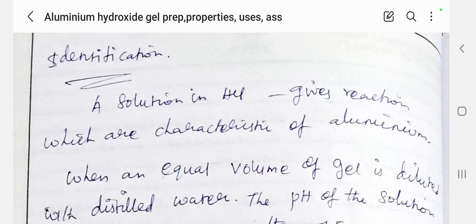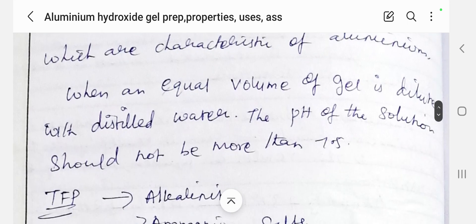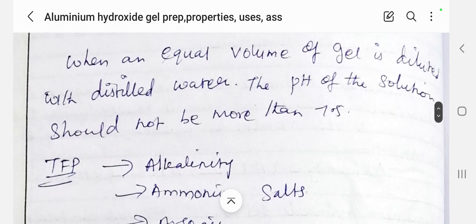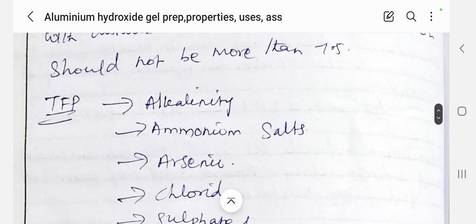For identification: a solution in hydrochloric acid — first the substance is treated with hydrochloric acid — this gives the characteristic reaction of an aluminium compound. Next, when an equal volume of gel is diluted with distilled water, the pH of the solution should not be more than 7.5. Usually the pH limit should be 4 to 7.5.